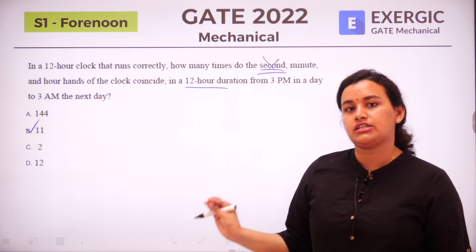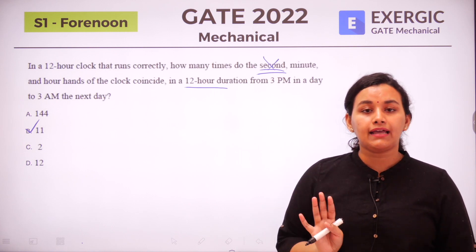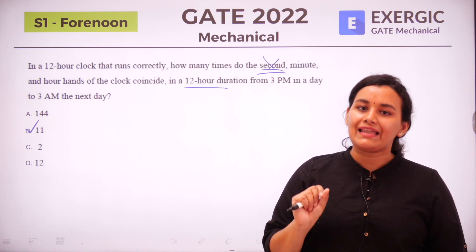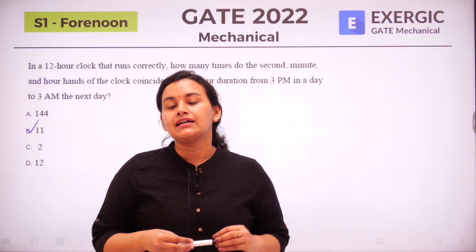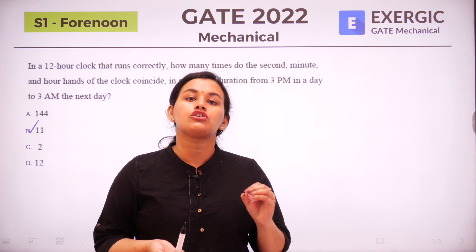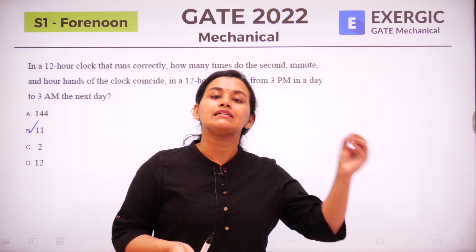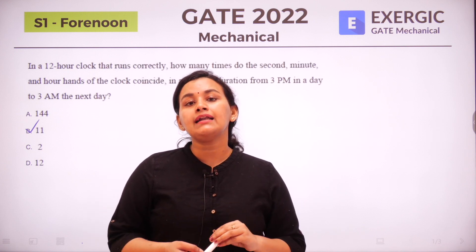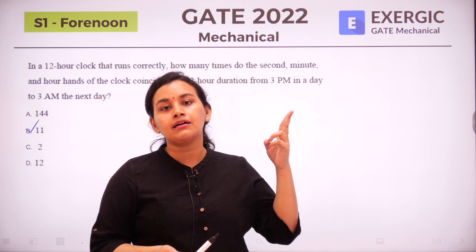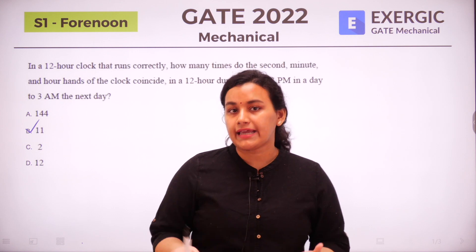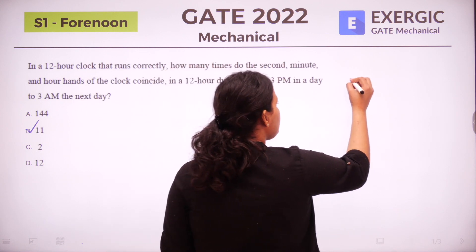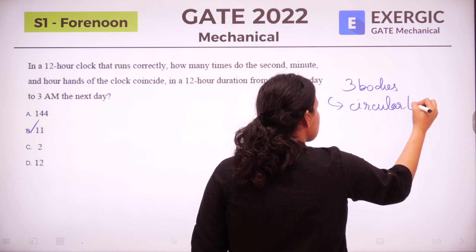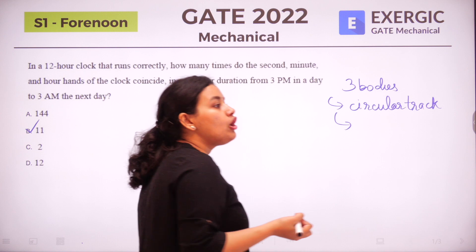But the second hand is there in the question, so we have to consider it in the solution also. If it's in the question, we have to account for it. Questions of clocks are nothing but questions of two bodies in circular motion in the same direction. If we include the second hand, it becomes equivalent to three bodies moving in a circular track in the same direction. That's all we need to look at clock questions as — if your concept of circular tracks is clear, you can solve this.